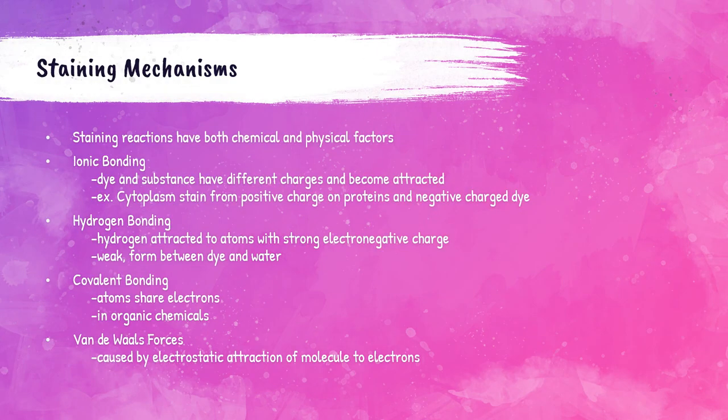Staining reactions involve both physical and chemical factors. Ionic bonding happens when the dye and the substance to be dyed develop different charges and become attracted to each other. Hydrogen bonding is when a hydrogen molecule is attracted to atoms with a strong electronegative charge — this is a weak bond that can form between the dye and water. Covalent bonds occur when atoms share their electrons, which occurs frequently in organic chemicals. Van der Waals forces are created by the electrostatic attraction of molecules to electrons.